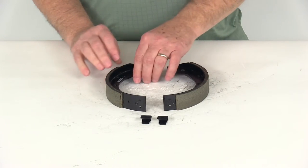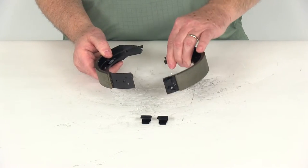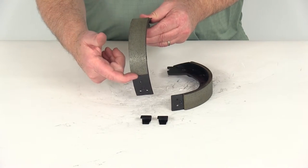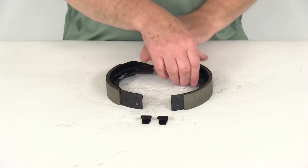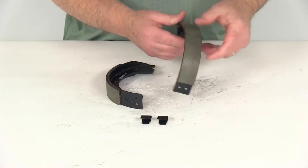This includes the primary shoe and the secondary shoe. You can tell the difference by looking at the size of the pad—you can see this pad is a little bit smaller than this pad. This one's a lot longer.